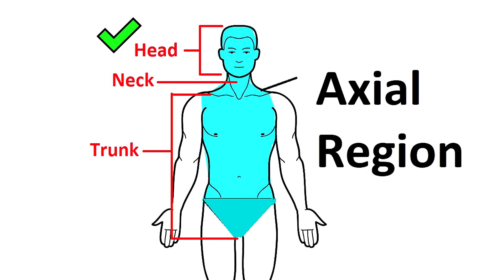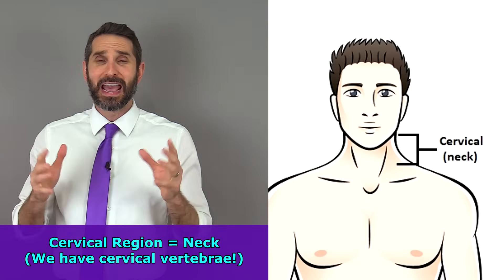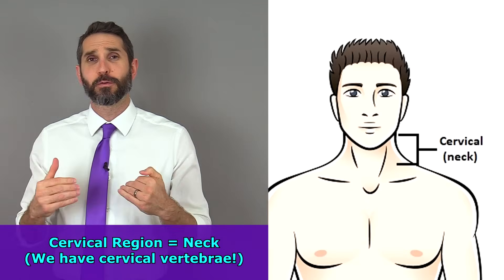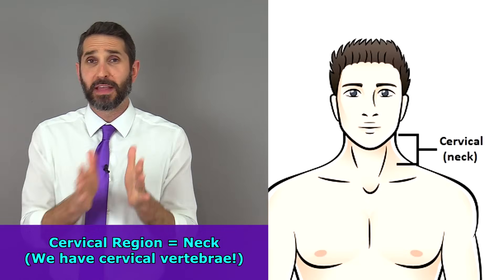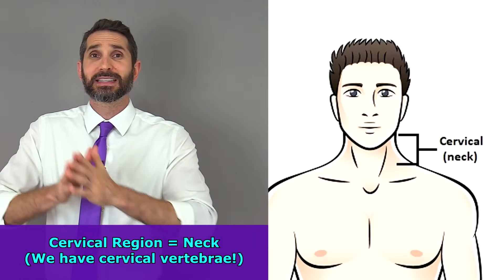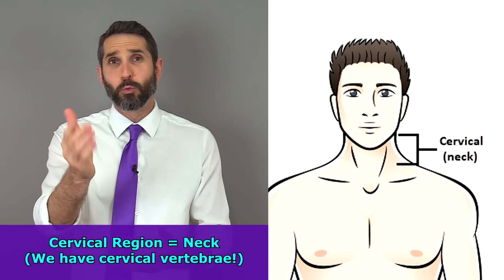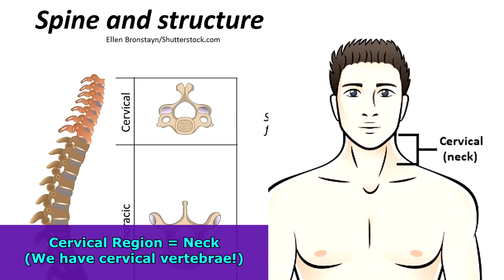That wraps up the major regions of the head. The neck is referred to as the cervical region — that's what cervical means, it means neck. And you have vertebrae there called the cervical vertebrae, or the cervical spine.